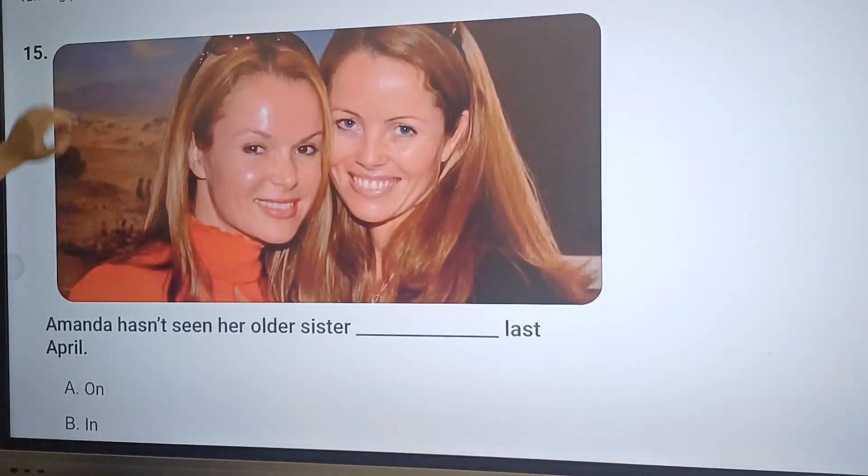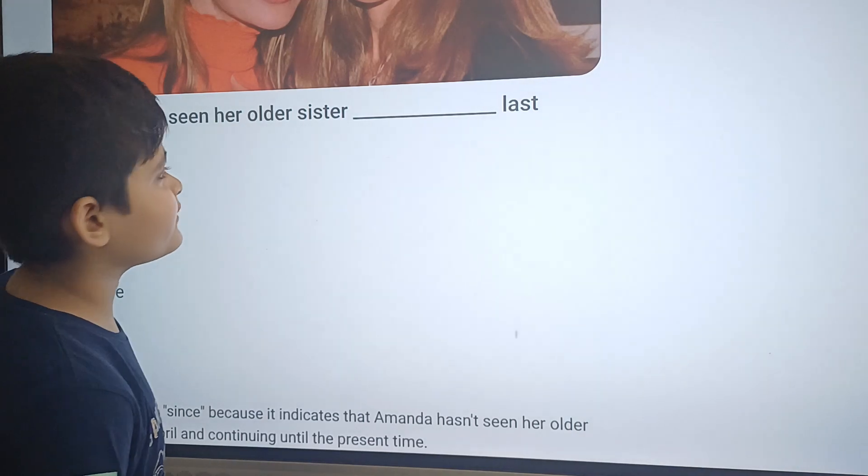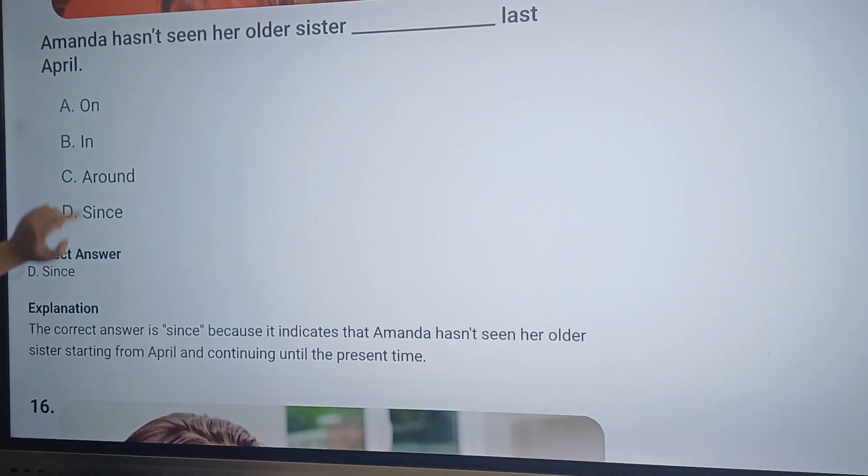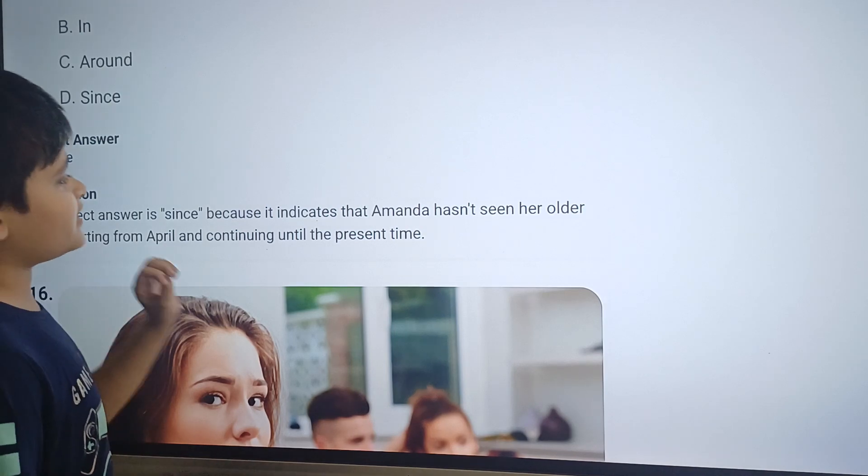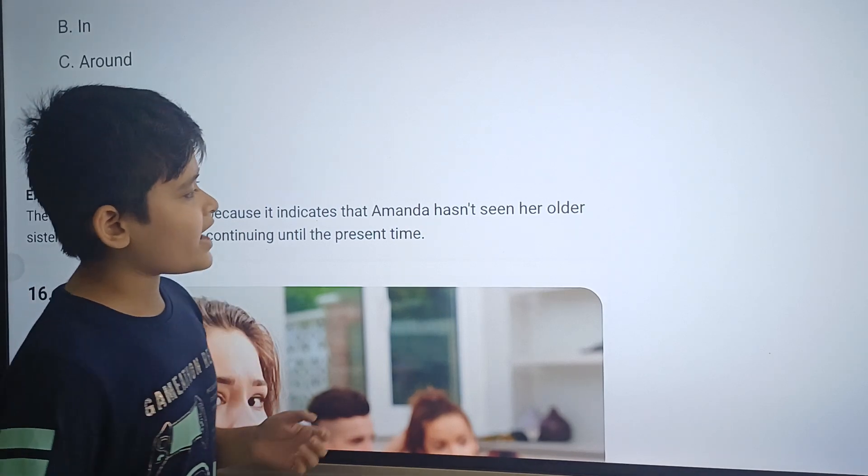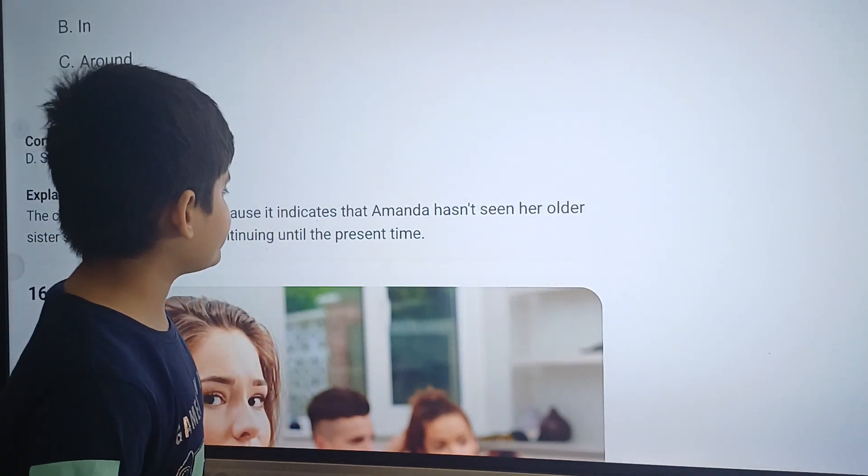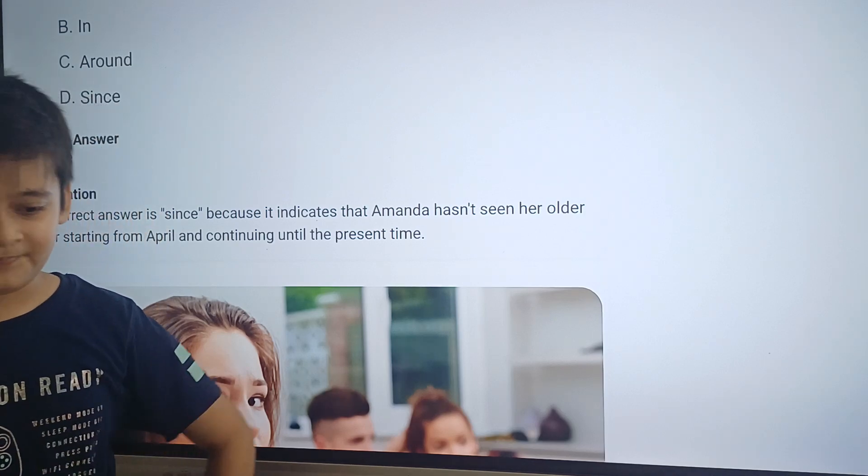Now, the final question for this class, question fifteen. Amanda hasn't seen her older sister dash last April. Well, the answer for this final question will be option D, since. The explanation is: The correct answer is since because it indicates that Amanda hasn't seen her older sister starting from April and continuing until the present time.